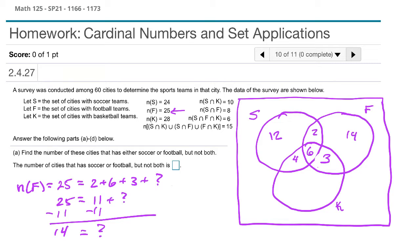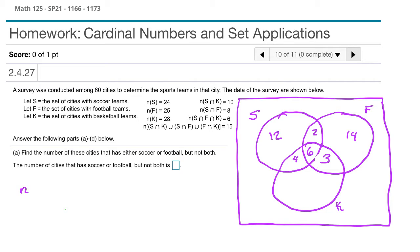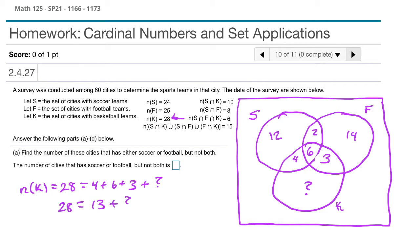Finally we figure out the basketball-only region. Set K has 28 cities total. Of those 28, we've accounted for 4, 6, and 3, giving us 13 accounted for. So 28 equals 13 plus the unknown. Subtracting 13 from both sides gives us 15 remaining in the basketball-only region.